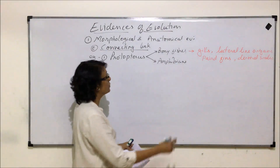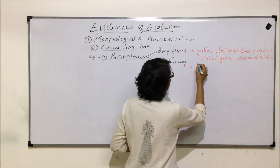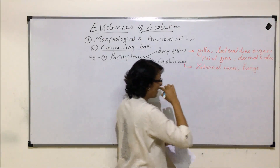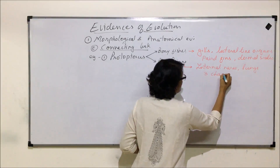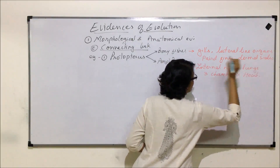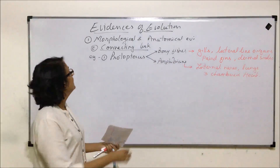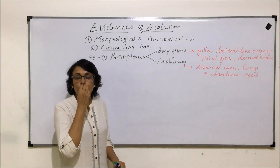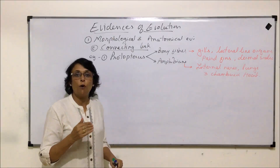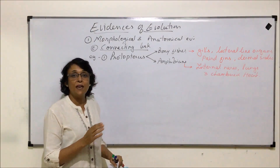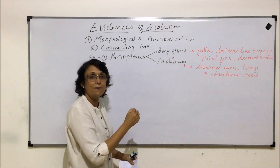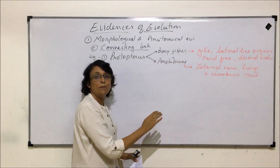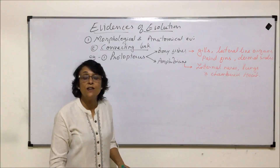The amphibian characters exhibited by Protopterus are internal nares, presence of lungs, and a three-chambered heart. This indicates that this organism has characters of both amphibians and fishes, showing us a trend of evolution. Life originated in water, and from water amphibians evolved and then became totally terrestrial. As they became terrestrial, gills were replaced by lungs, and the two-chambered fish heart became a three-chambered heart.